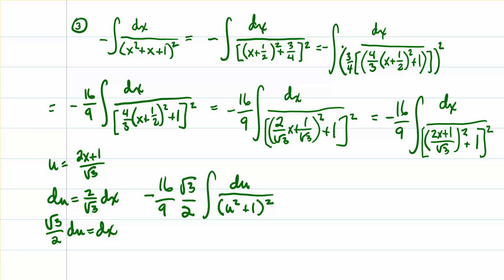Now we have negative 16 over 9 times square root of 3 over 2, times the integral of du over (u² + 1). We're going to simplify the fractions out front, and we'll get negative 8 root 3 over 9.